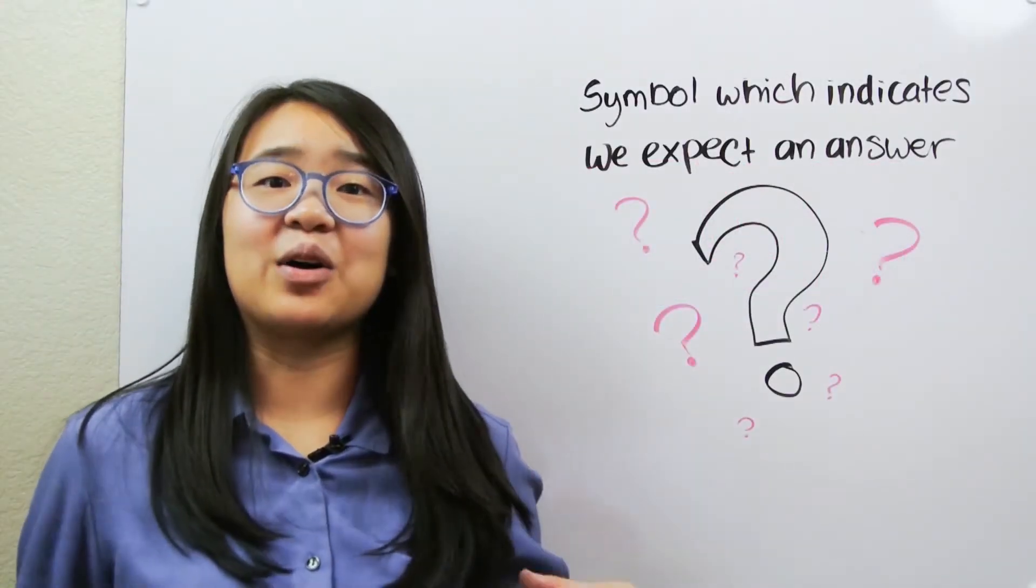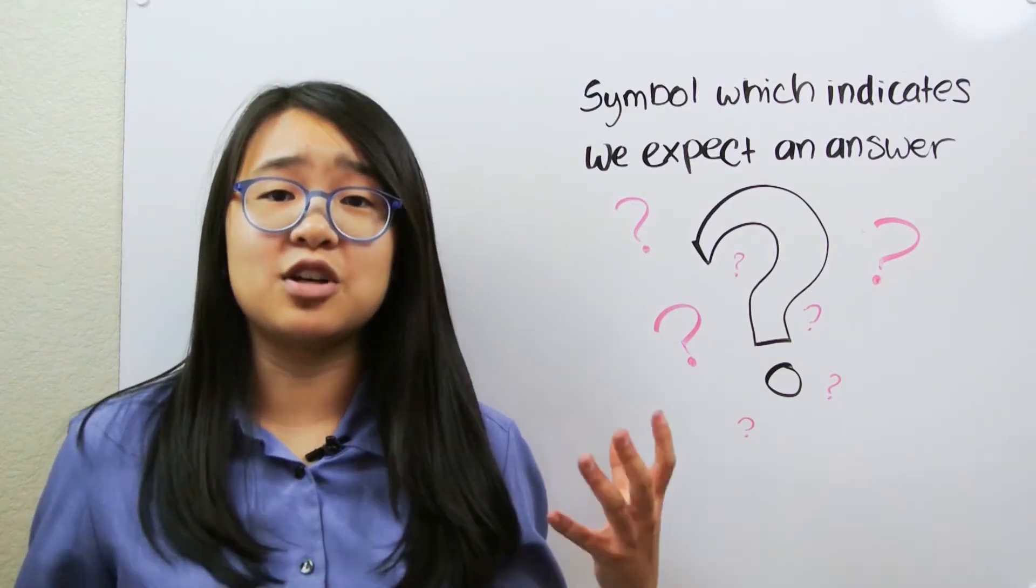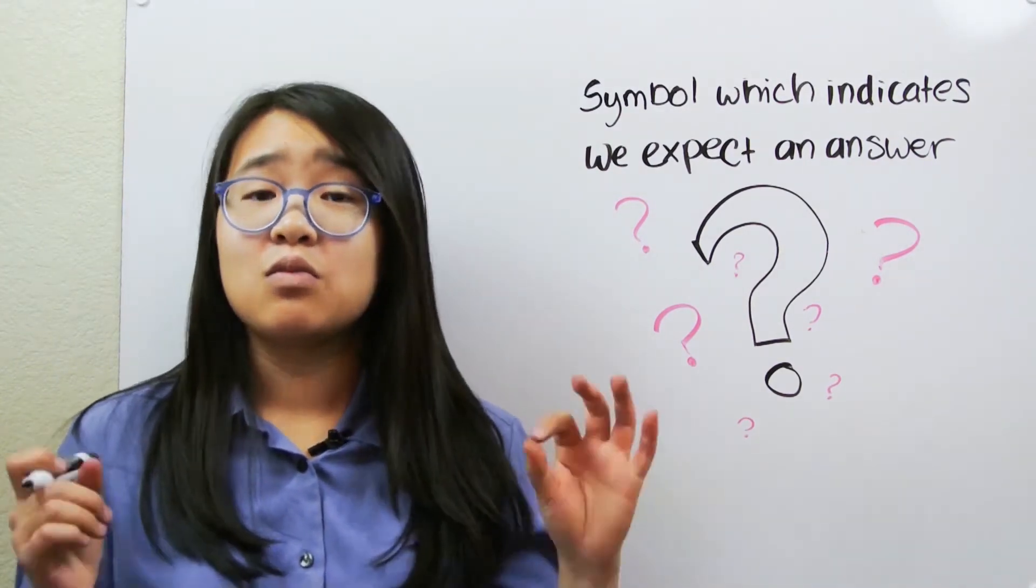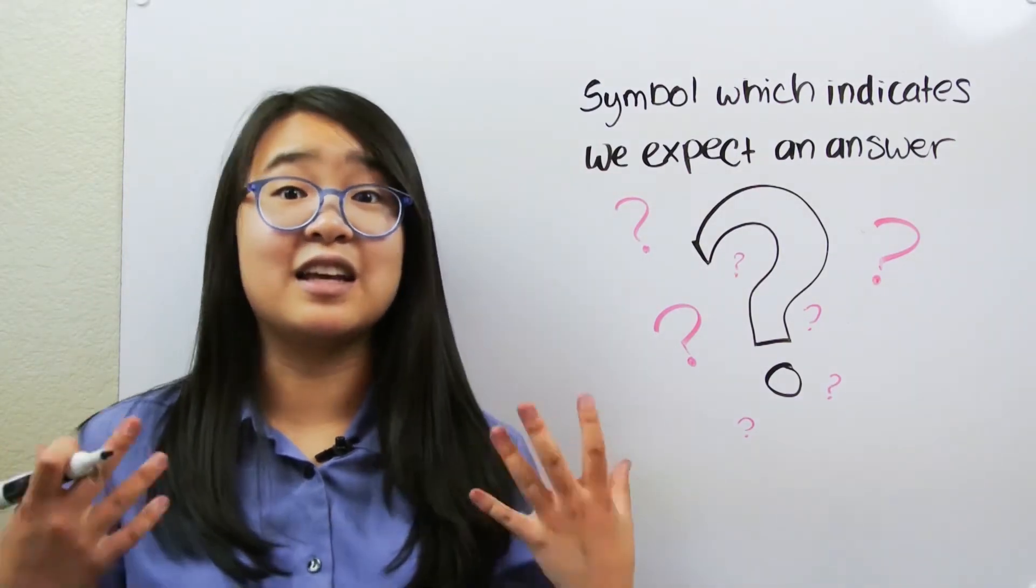Sometimes sentences are questions. We ask a question when we want to know something that we don't have the answer to. When we ask a question, we use another symbol at the end of the sentence to let readers know that we expect an answer.